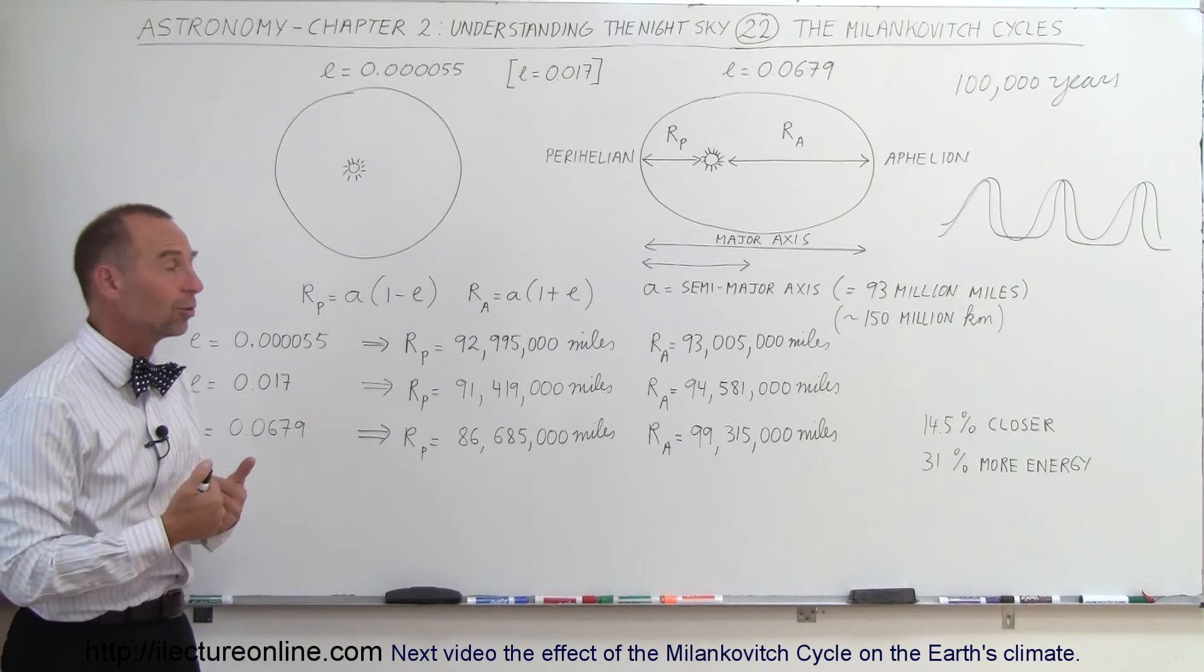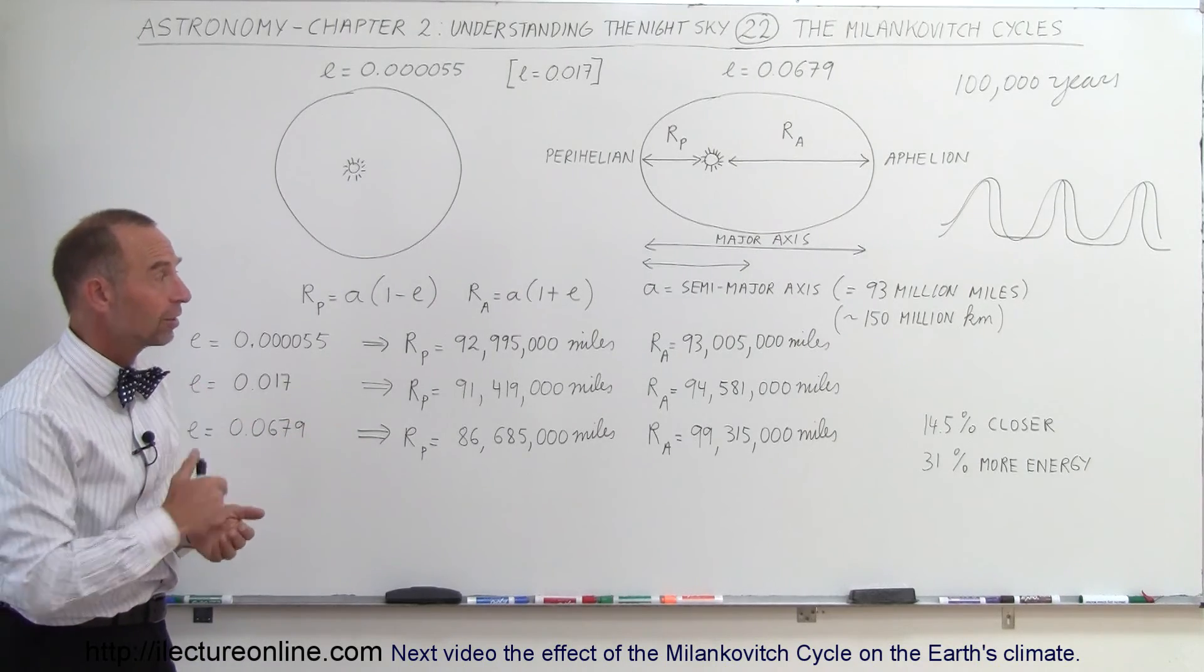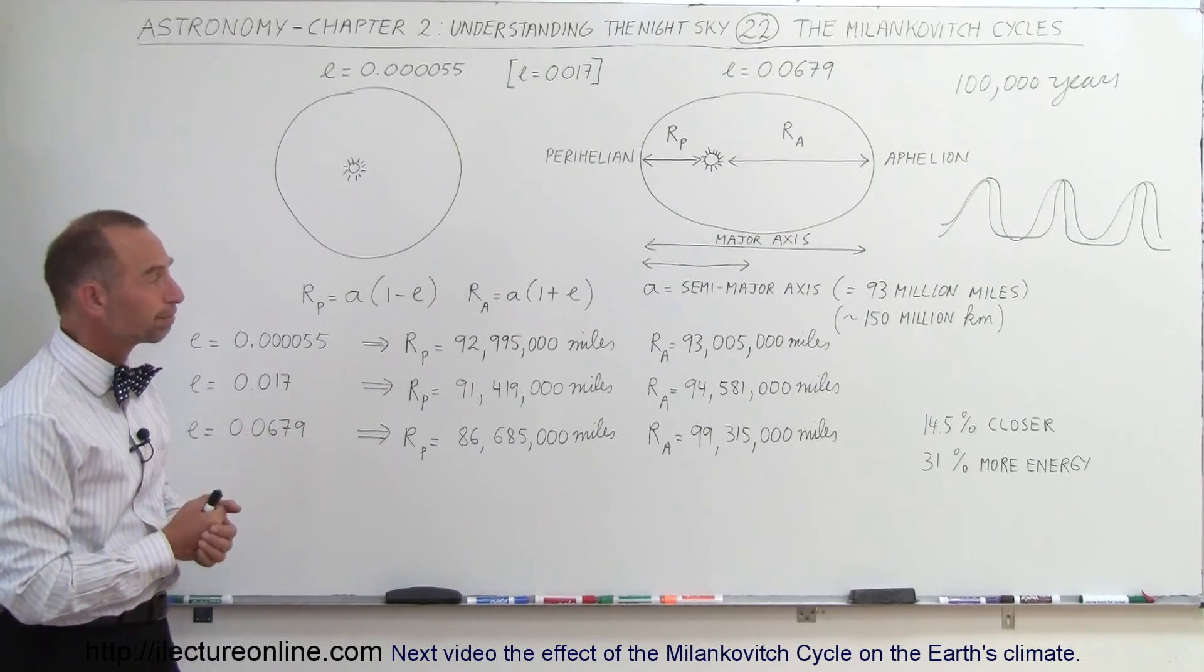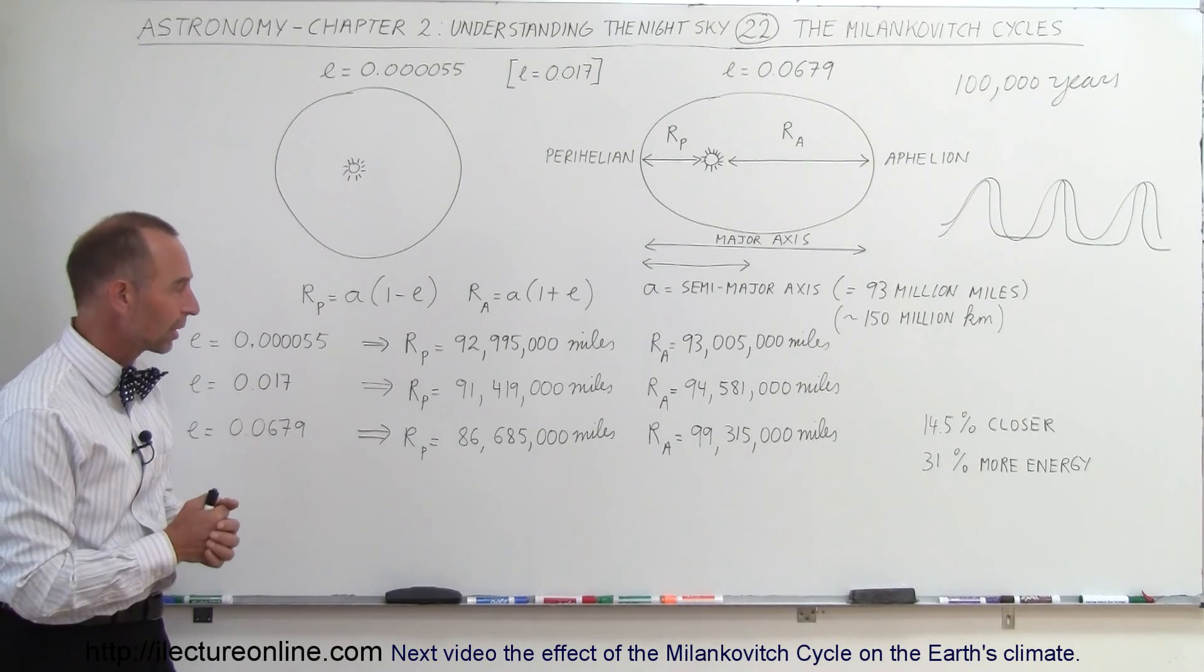And that is known as Milankovitch cycles, which is named after a very famous Russian scientist and engineer who figured this out and published that work. Very amazing to see how much the Earth's orbit can actually change.